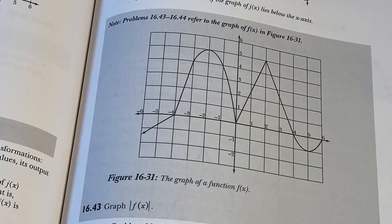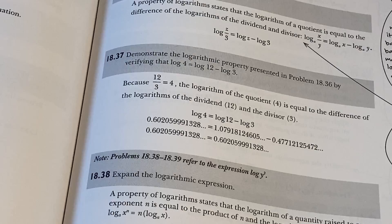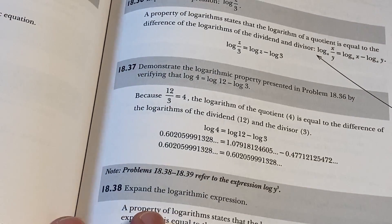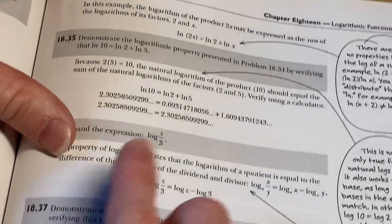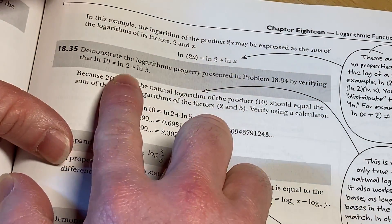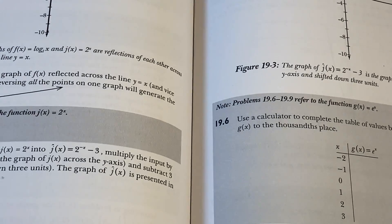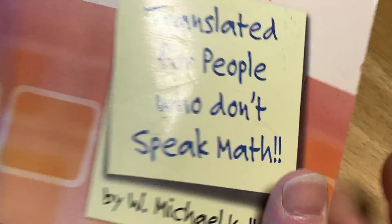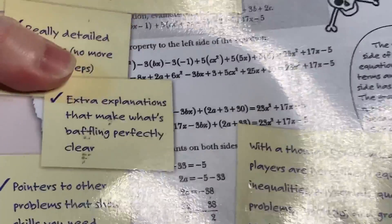Pretty cool stuff. A really good book on algebra. It's got logarithms. Demonstrate the logarithmic property presented in problem 18.34 by verifying. Yeah, it's the product rule for logs. All kinds of stuff in here. How many problems did it say it had? Let's go back. It said a thousand algebra problems. Let's look at the back.